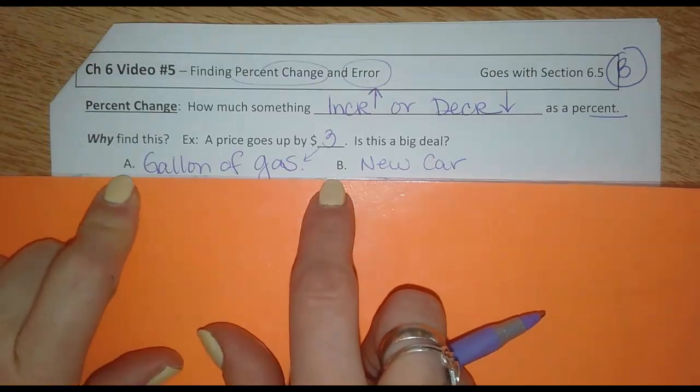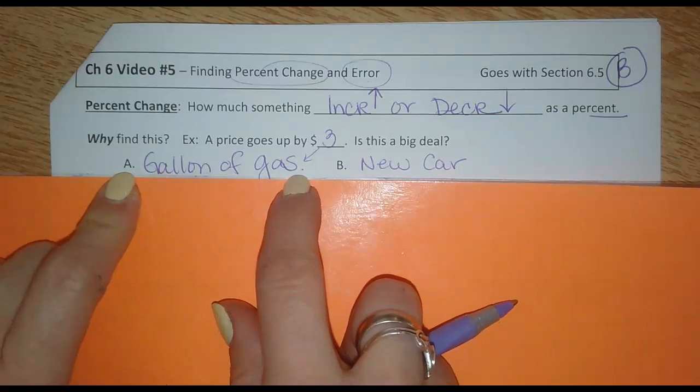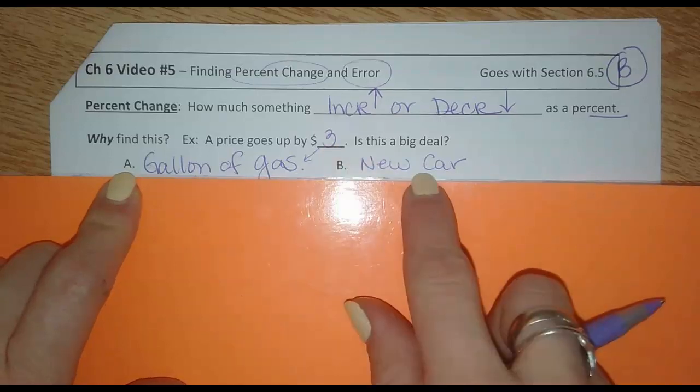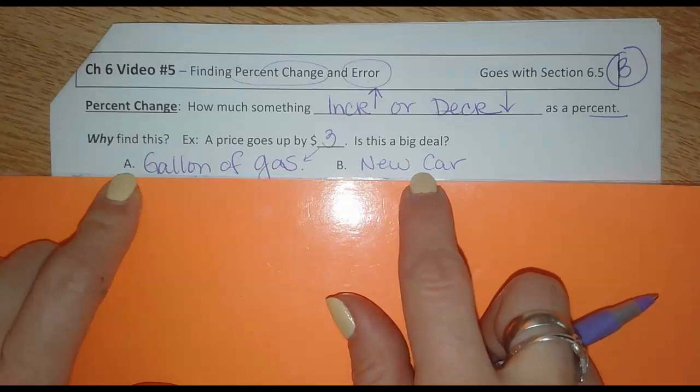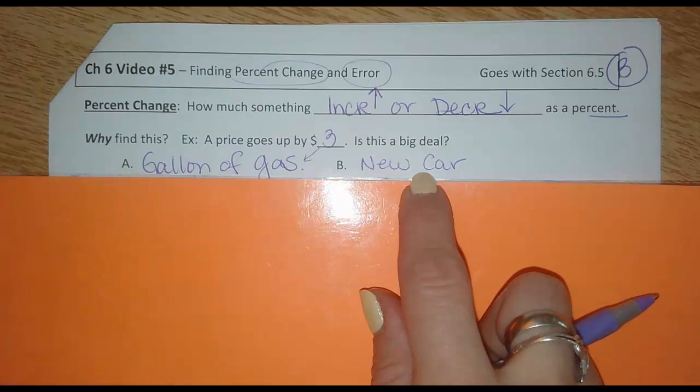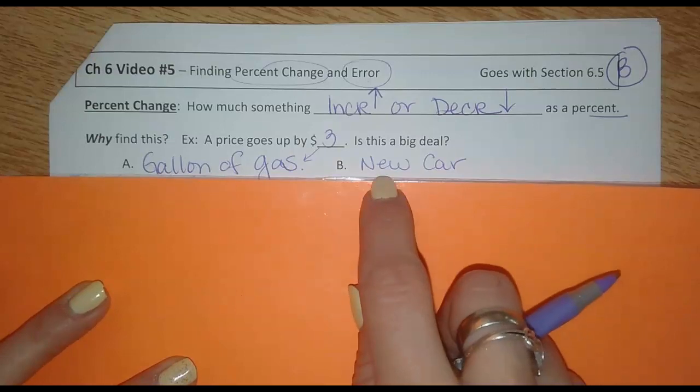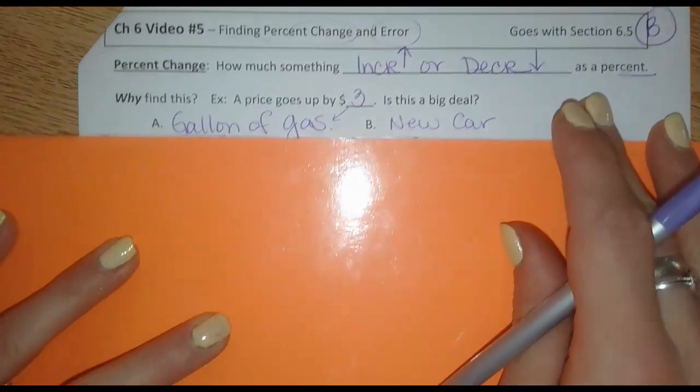Case A, let's say that was $3 onto the price of a gallon of gas. That's a huge difference. If gas suddenly went up to $6 or $7 a gallon, that would be a big deal. But if you add $3 onto the price of a brand new car or your house, $3 is nothing. $3 does not make any difference in the overall price of your new car. So we turn it into a percent to help us determine how much impact that's going to have.